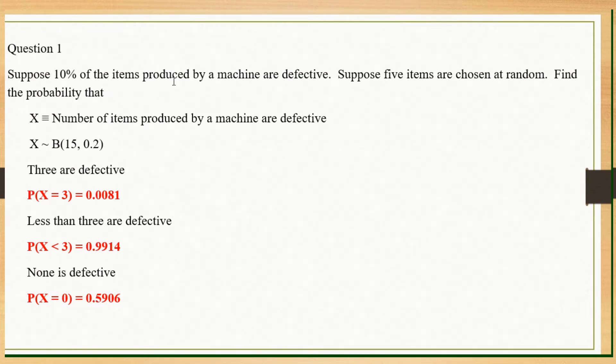Suppose 10% of the items produced by a machine are defective. Suppose 5 items are chosen at random. This tells you it's a binomial distribution. 5 items chosen at random, so you pretty much know your n will be 5. Find the probability that the number of items produced by a machine are defective. You would have basically 10% of the items produced are defective. Therefore, 0.1. Then you just calculate as per usual. This should be no problem.